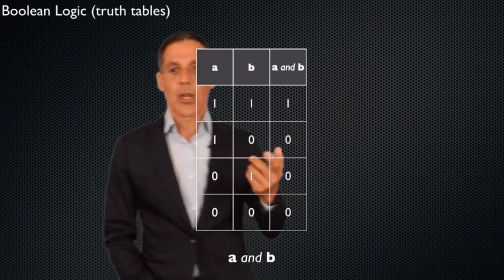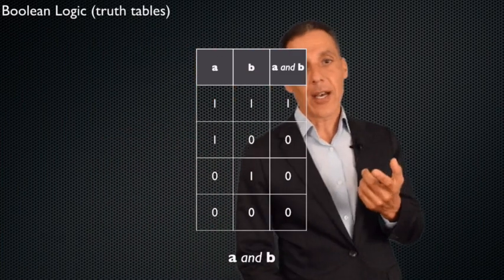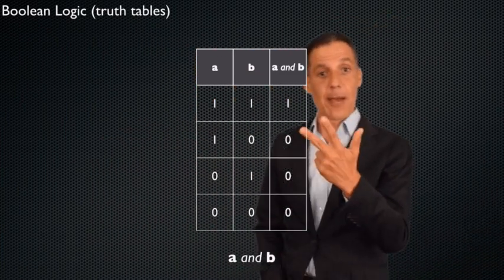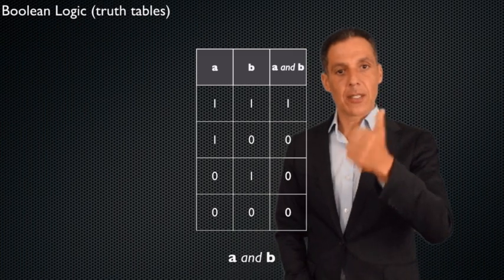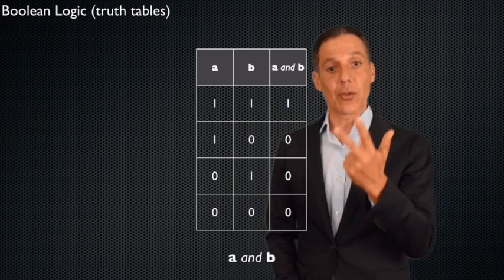Let me remind you what the Boolean operators are. There are three of them: logical AND, logical OR, and logical NOT.